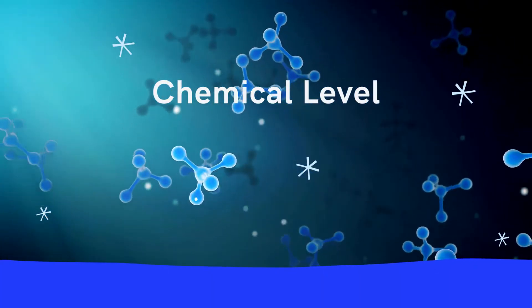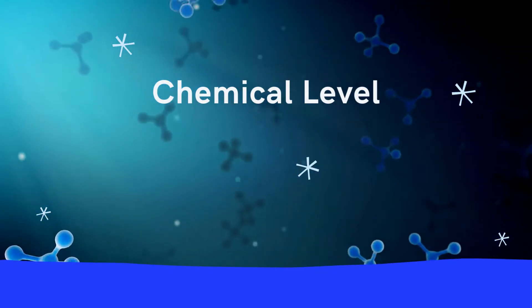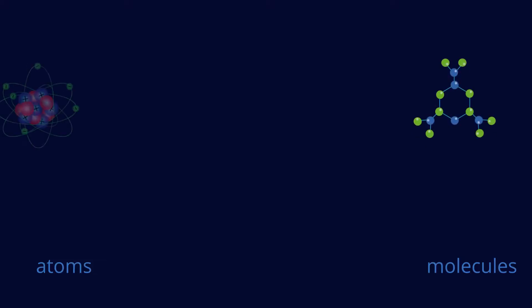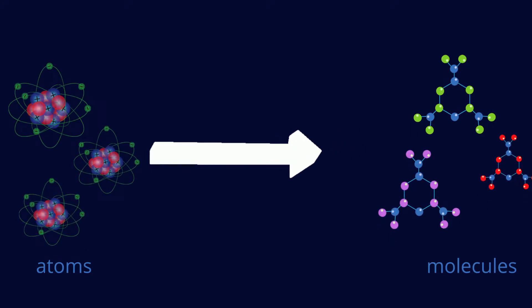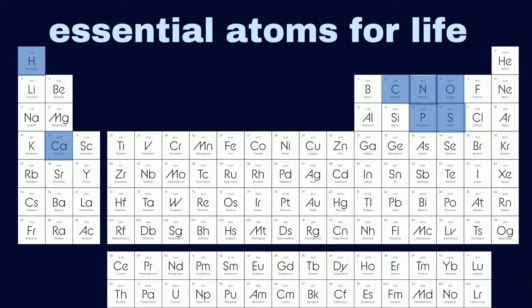The first level is the chemical level. It is the basic level. It is made up of the atoms and the molecules. As we know, atoms are the smallest unit of matter. In this page, we are seeing the essential atoms for life highlighted in blue: